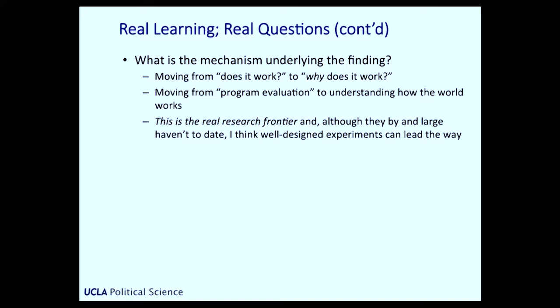The other big question that work to date has not been very good at addressing is the question of what's the mechanism that underlies the finding. There's a lot of pressure now to move from posing the question 'does it work' to the question 'why does it work — what's the mechanism, what are the channels through which this treatment is having its effect?' You can think of this as moving from where randomized controlled trials started — looking at program evaluation — to thinking about how the world works in general. My sense is that's the real research frontier, and well-designed experiments can achieve that goal of moving us from 'does it work' to 'why does it work' by really looking at mechanisms.